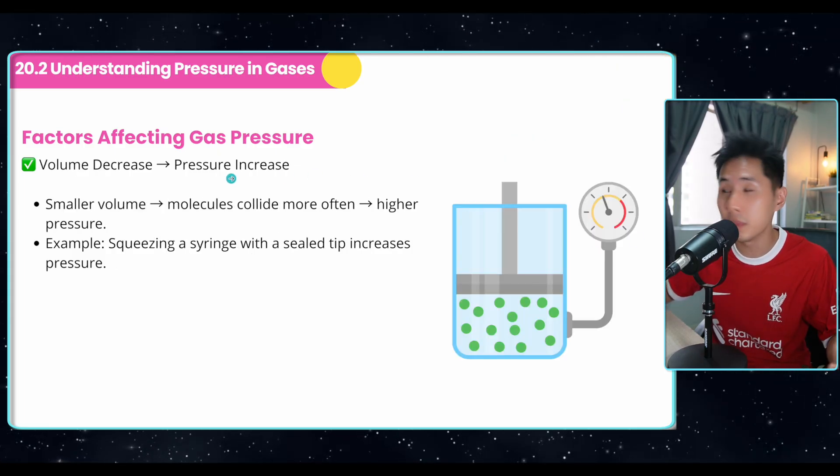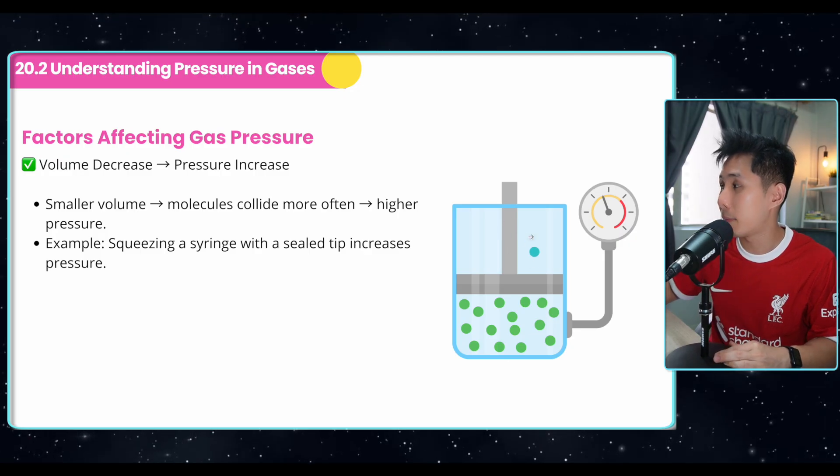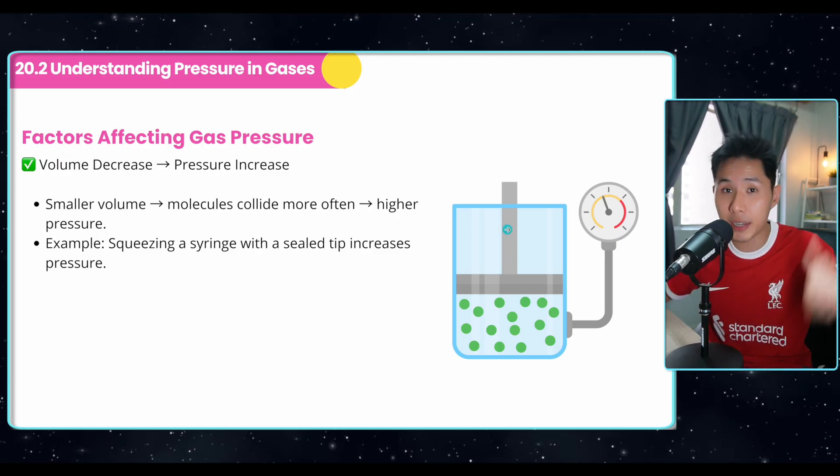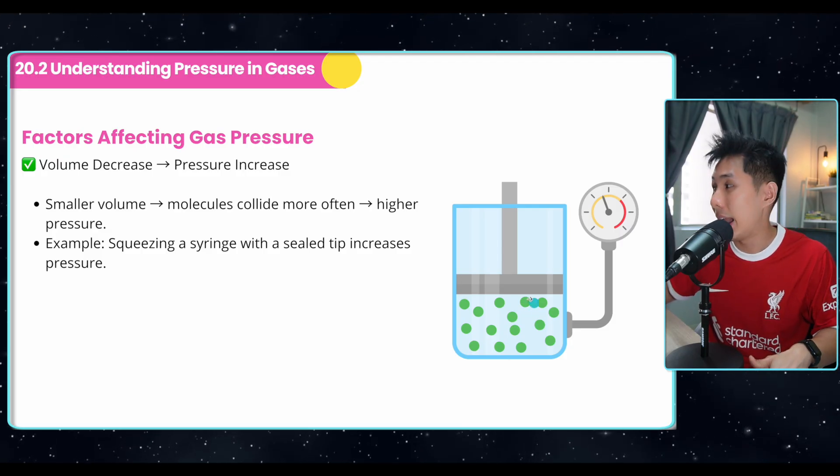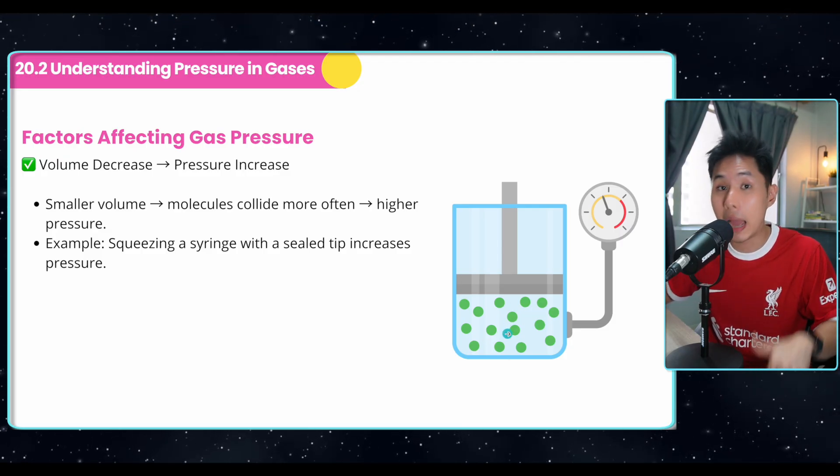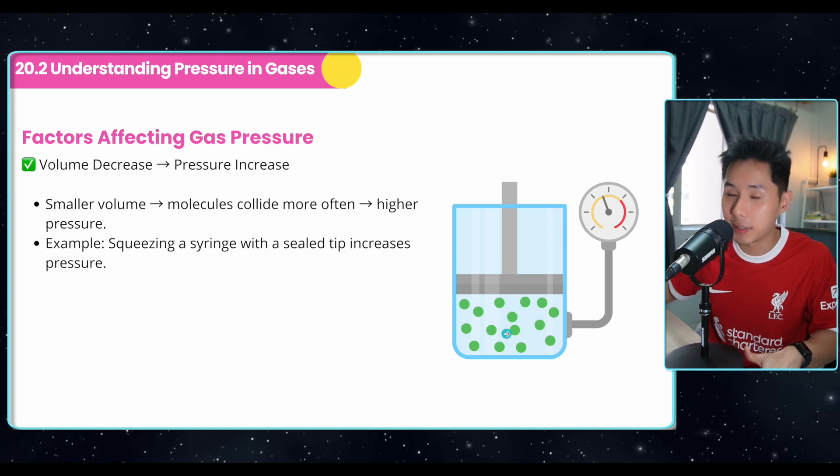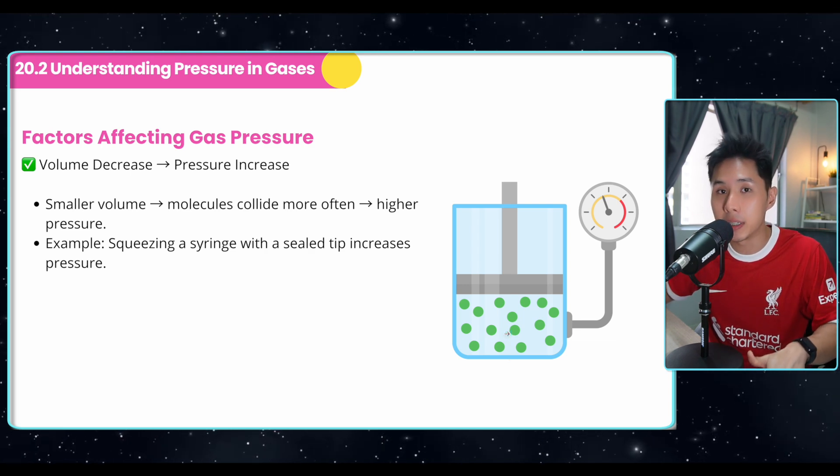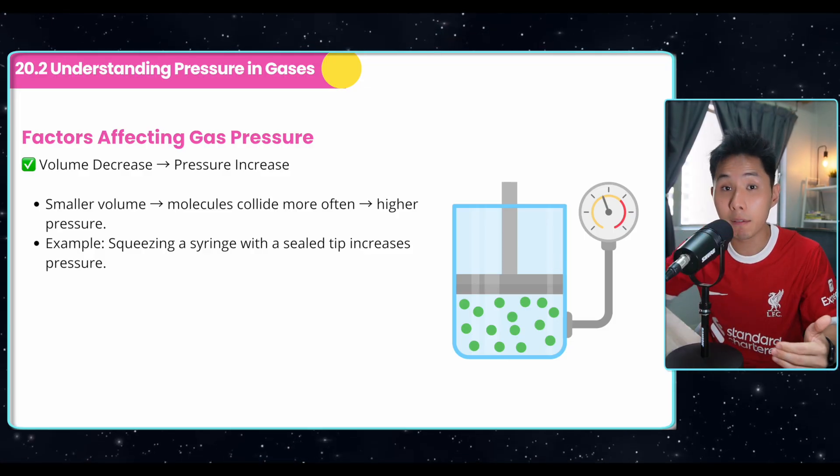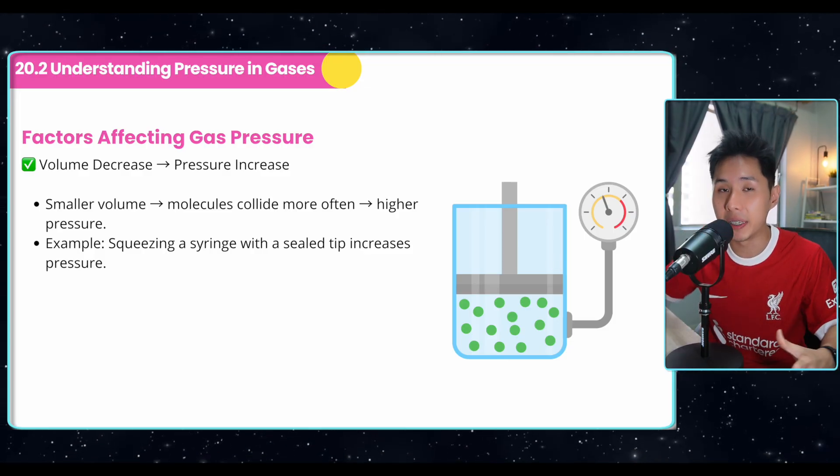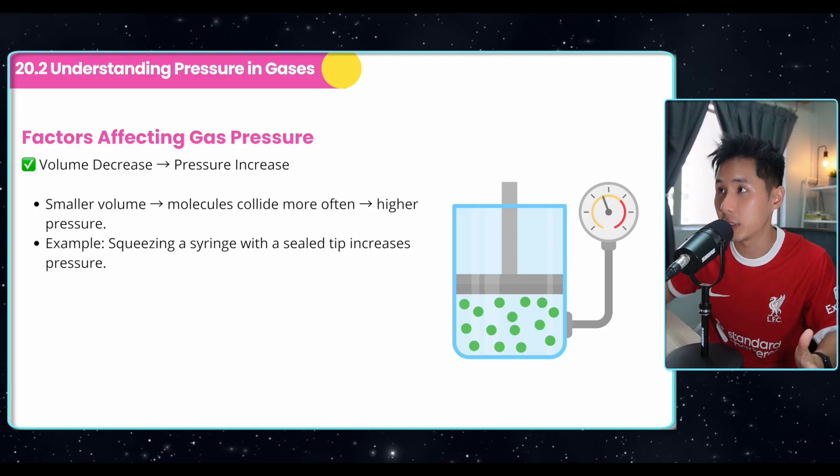So another factor is volume. So imagine I have this gas particle here, the piston. If I were to press down, you can see that gas particles has less area to move. And because of that, collision will happen more frequently. And as a result, more force and ultimately more pressure exerted. So these two factors, temperature and volume, they are related to laws that we'll be learning in a while called the Charles law and Boyle's law.